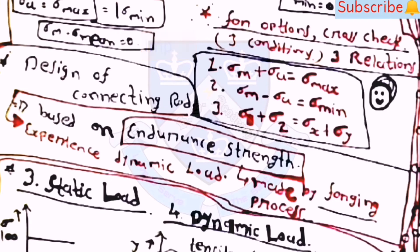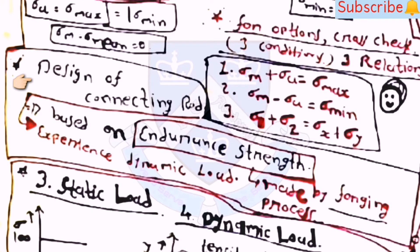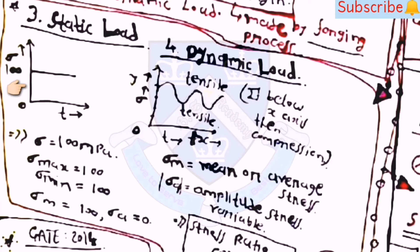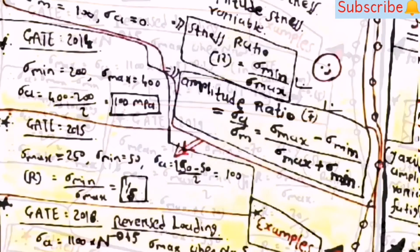Note: design of connecting rod is based on endurance strength because it experiences dynamic load, and the connecting rod is made by the forging process. For static loading, sigma_max = sigma_min = sigma_m = 100 and sigma_a = 0. For dynamic load, stress ratio R = sigma_min/sigma_max, and amplitude ratio = sigma_a/sigma_m = (sigma_max − sigma_min)/(sigma_max + sigma_min). Many examples from these concepts were asked in the GATE examination.